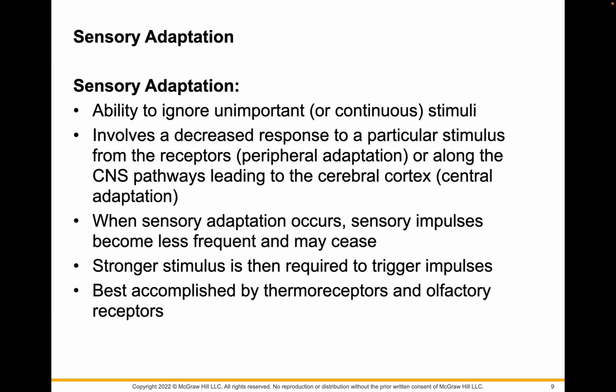Sensory adaptation is the ability to ignore unimportant or continuous stimuli, and it involves a decreased response usually after a prolonged stimulus. To sense it again, you're going to need a stronger stimulus. For example, I can go to sleep with a light on, but if more light happens in the room, that might wake me up. Good examples are thermoreceptors and olfactory receptors, which are chemoreceptors.